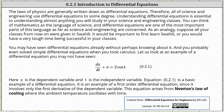The x is the dependent variable and t is the independent variable. The equation is a basic example of a differential equation. It is an example of a first order differential equation since it involves only the first derivative of the dependent variable. This equation arises from Newton's law of cooling when the ambient temperature oscillates with time.